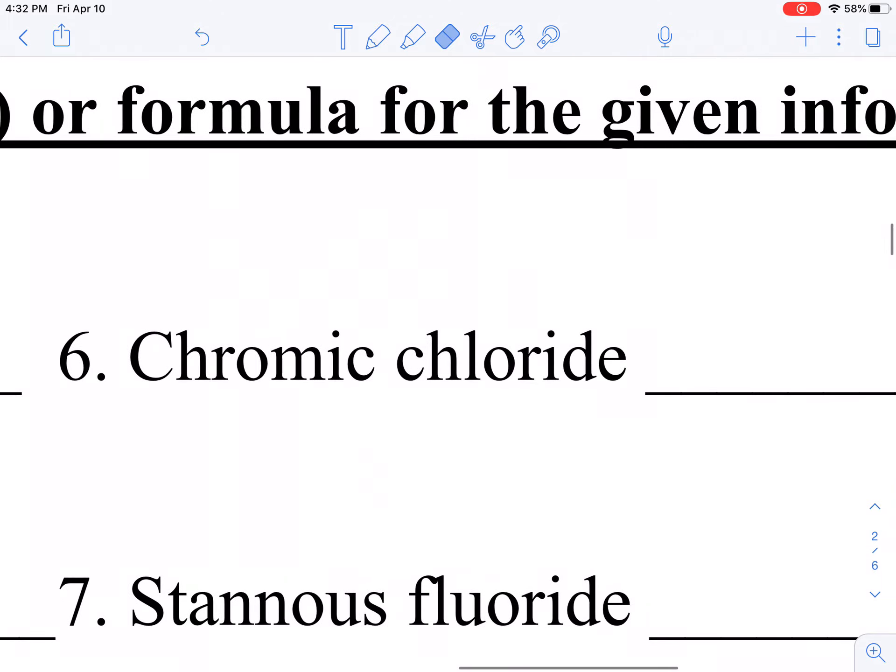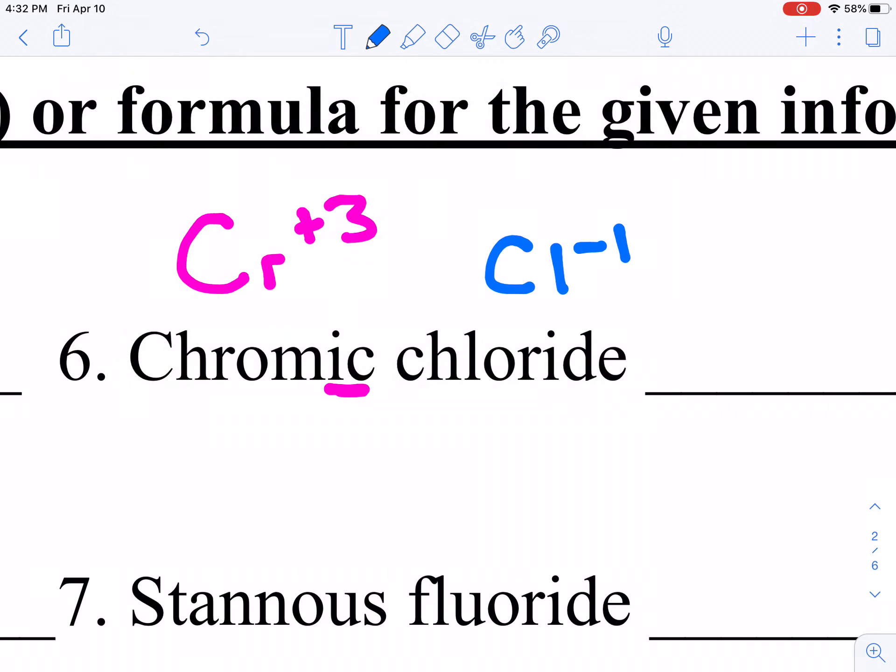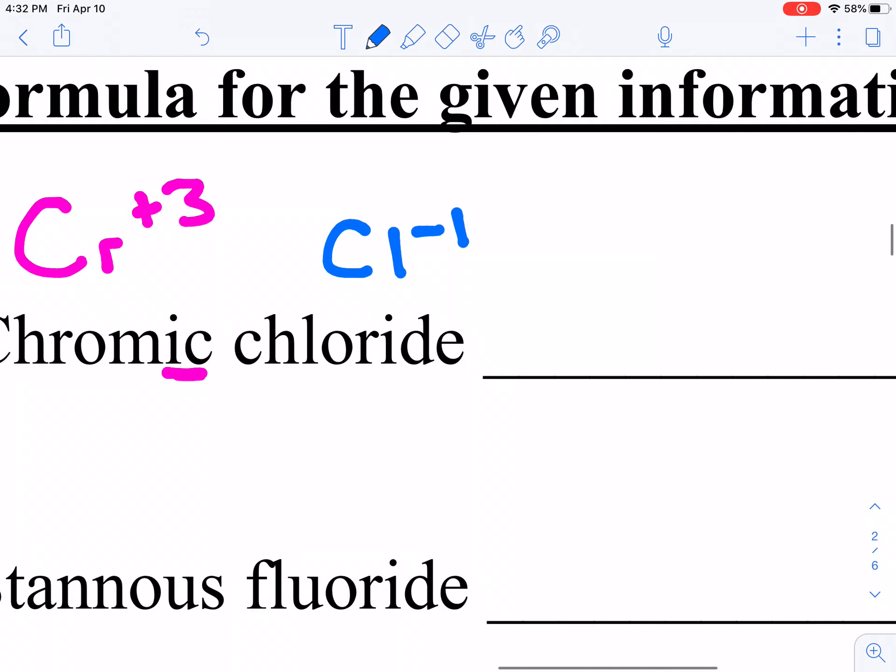So much like we did in the first video, we are going to identify every one of these ions. So chromic, you can find it over on your little cheat sheet, and you'll notice that chromic, it has an IC ending, so that's the higher charge. But what are the two charges? Well, chromium can be plus 2 or plus 3, so chromic is our plus 3 version. Chloride never changes. Chloride is always Cl minus 1. And so when we put those together, you can use that crisscross method where this 3 comes down with chlorine and the 1 comes down with chromium. Or you can just think about the fact that you are going to need 3 Cls for every 1 chromium.